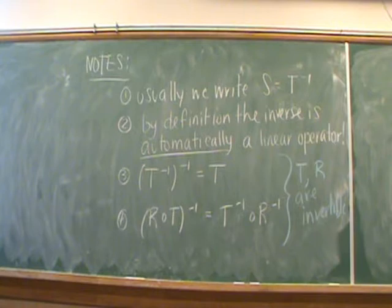I want you to understand here that the way we've defined the inverse, we don't need any extra theorems to tell us whether or not the inverse is a linear transformation. By definition, it's automatically going to be a linear transformation because we want S to be inside the set of linear transformations from V to V.